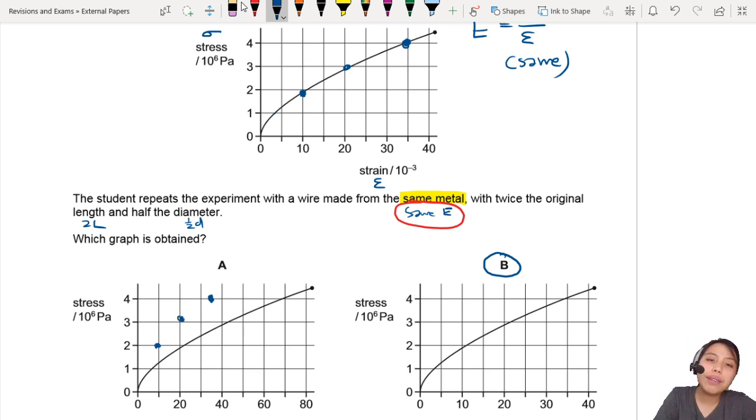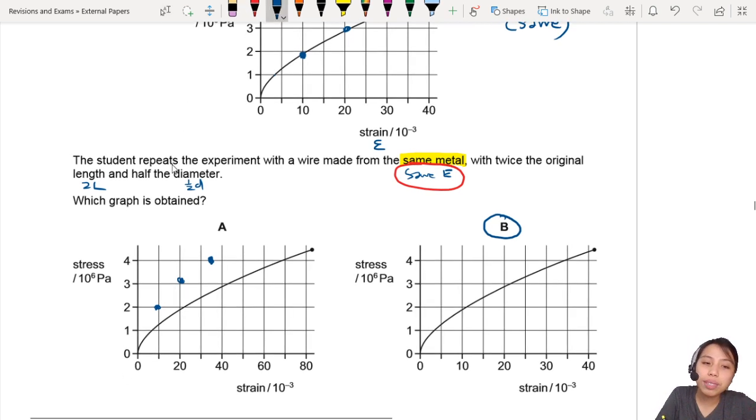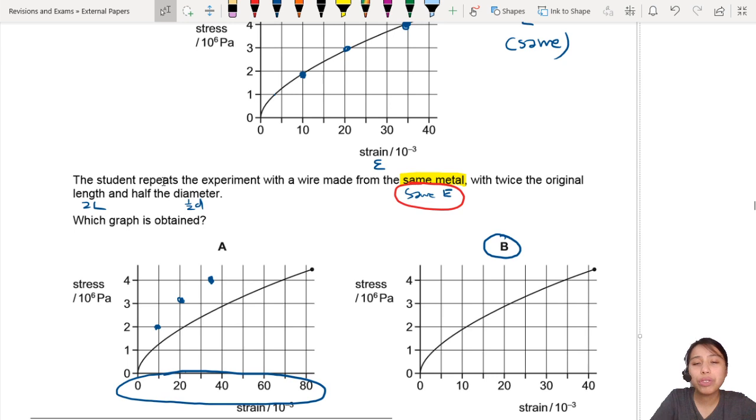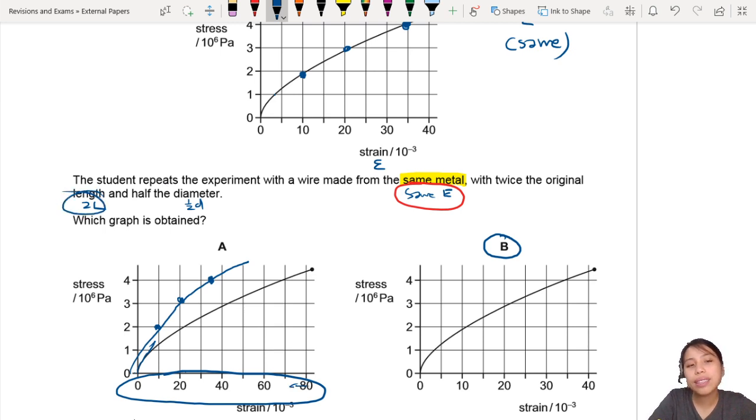So actually, if you want to use the different scale, you notice the scale is different? If you want to use the different scale, you must still have the same ratio of stress over strain. So you need to have a graph like that. But it can go more until 80. That's because you have twice the length, half diameter. So you can go to a greater range before you reach the breaking point.